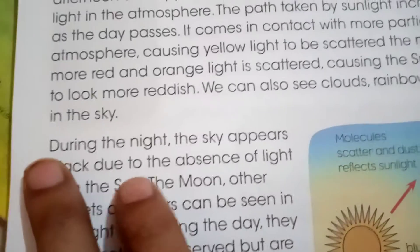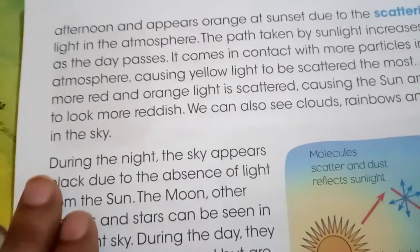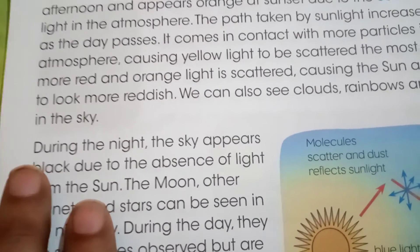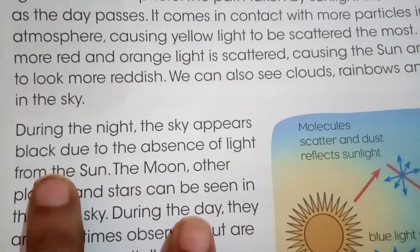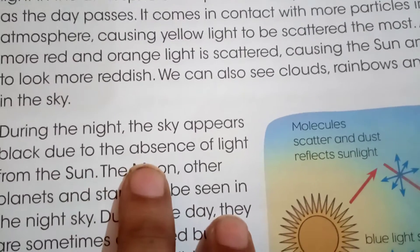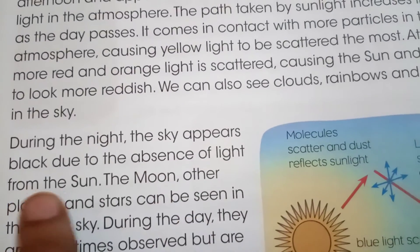Question number 2, page number 149: How does the sky look at night? This answer is on page number 148. Answer number 2: During the night, the sky appears black due to the absence of light from the sun.